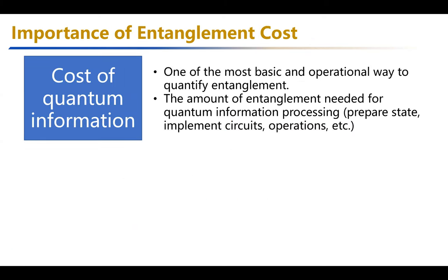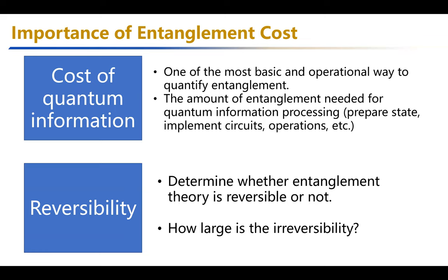Why is entanglement cost important? There are two main reasons. One is that entanglement cost helps you quantify the cost of your quantum information processing tasks. For example, in a distributed quantum information processing regime you do LOCC and distribute entanglement between parties. The second reason is that it fundamentally helps you understand reversibility — you need entanglement cost to determine whether the entanglement theory is reversible and, if not, how large the gap can be.